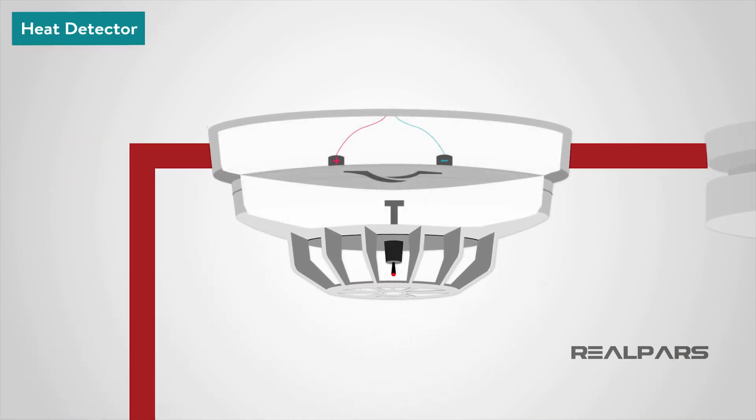Commonly, heat detectors work in a similar way to an electrical fuse. The detectors contain a eutectic alloy, which is heat sensitive. When a certain temperature is reached, the alloy turns from a solid to a liquid, which in turn triggers the alarm.